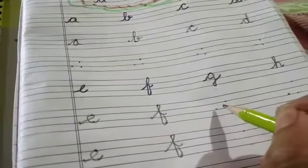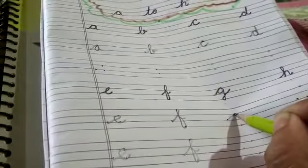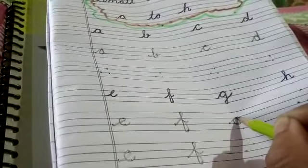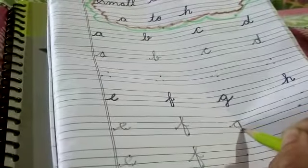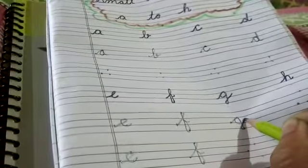First you will make C like this, now up and down to red line and make a small turn like this. And G.